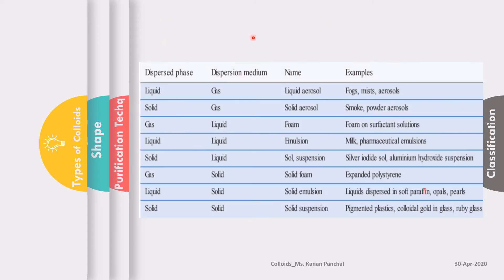Here are different examples of colloidal systems. These are the dispersed phases, these are the dispersion media, and this is the name given to that type of formulation along with examples. There is no gas-gas type of dispersion system because a gas-gas mixture is always in molecular form. Important ones to note: sols are solid in liquid, foams are gas in liquid, emulsions are liquid in liquid (oil in water or water in oil), and there are also suspensions, solid aerosols, and liquid aerosols — both dispersed in a gas phase.